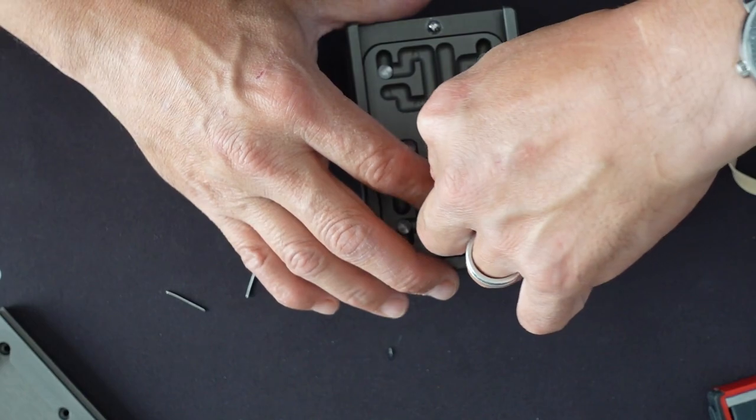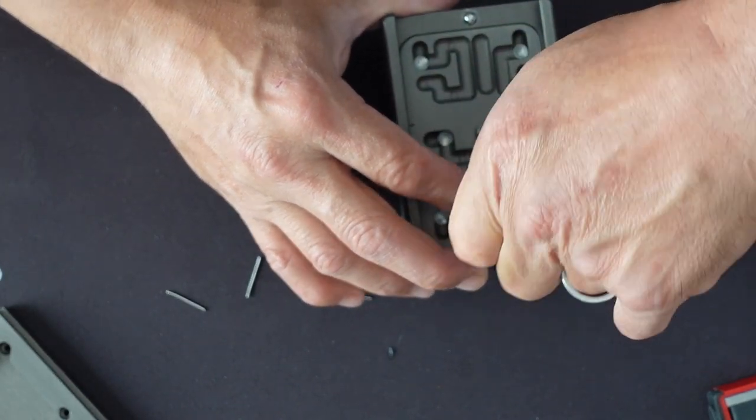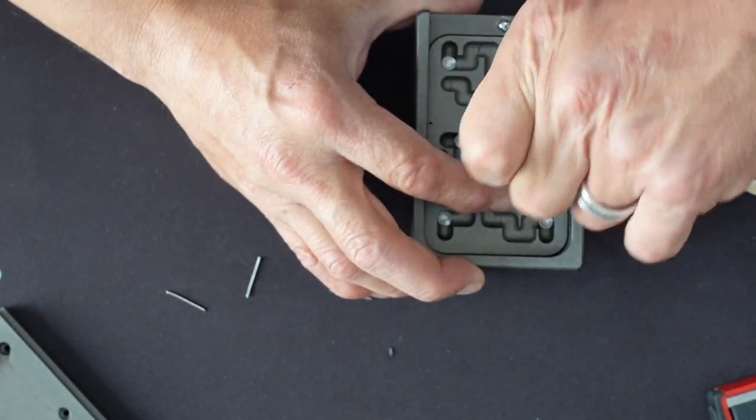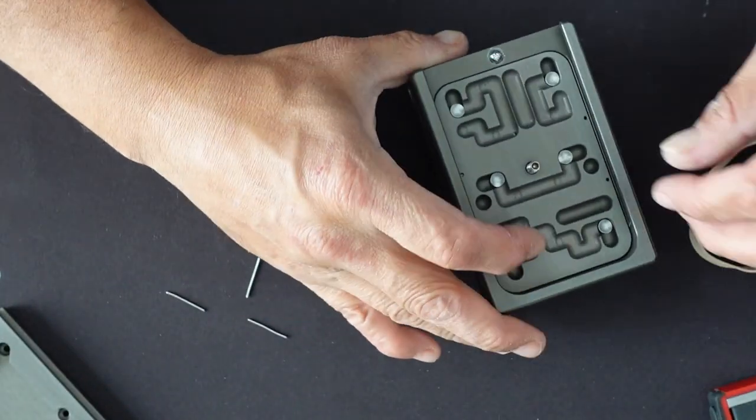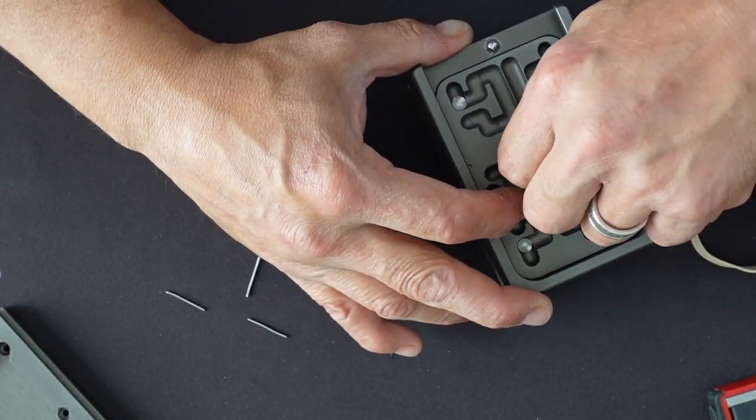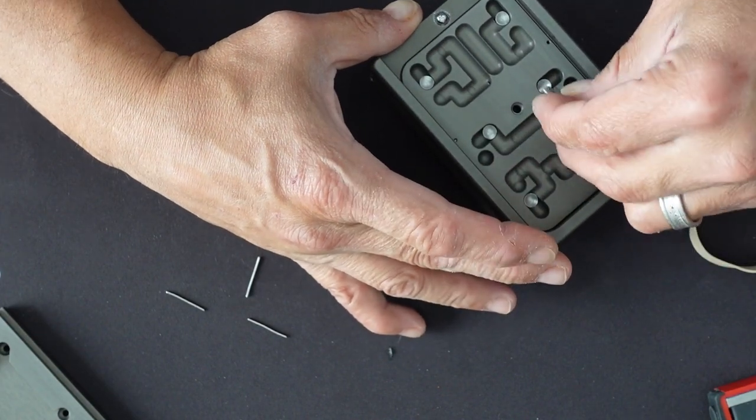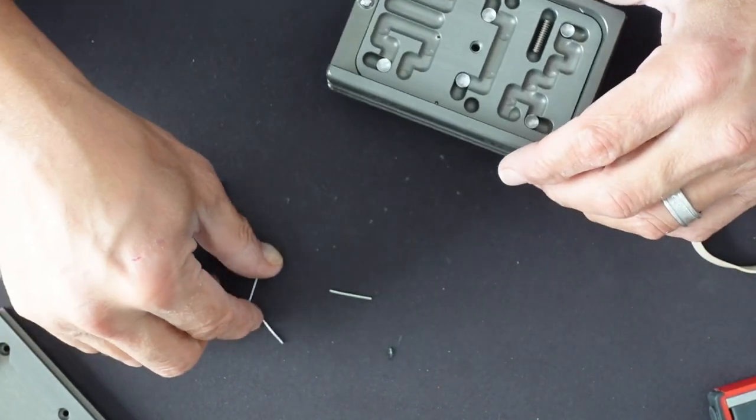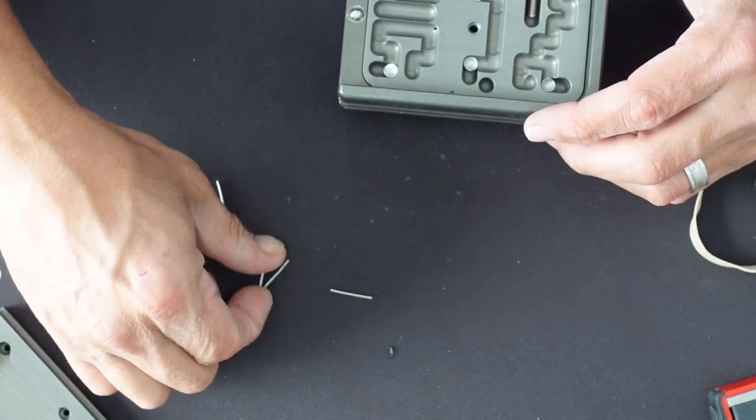Drop that right back down there. Make sure that you put these on the side with two. There we go. Pull these out. That locks it back in place.